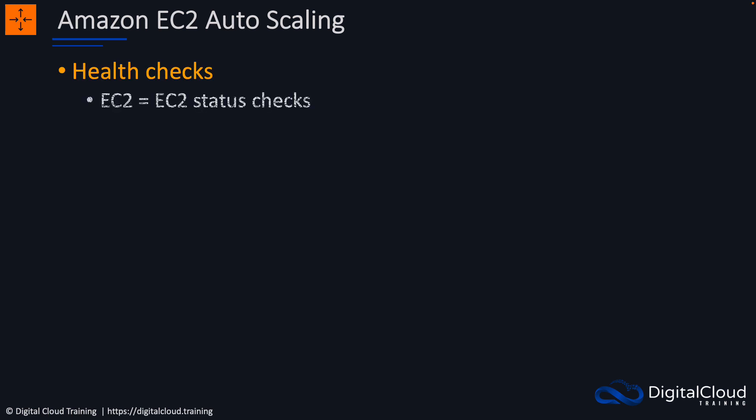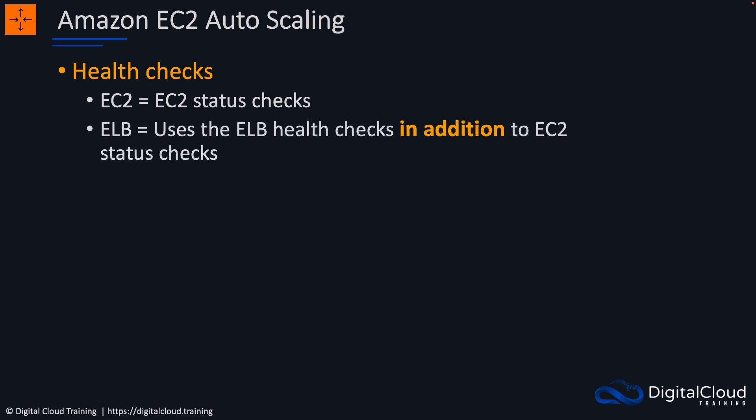With auto scaling we have health checks. There are a couple of different types: EC2, which are the EC2 status checks — if the status checks fail, it means there's a problem with the instance and auto scaling will replace it. The other is ELB — elastic load balancing — which means it will also use the ELB health checks in addition to the EC2 status checks. So it's also going to utilize information coming from the elastic load balancing service.